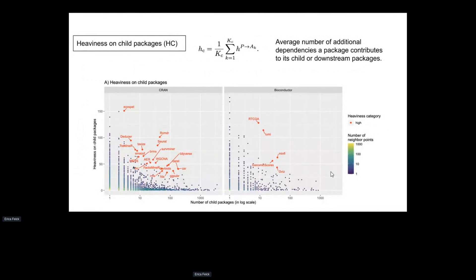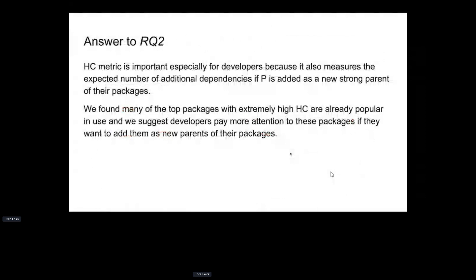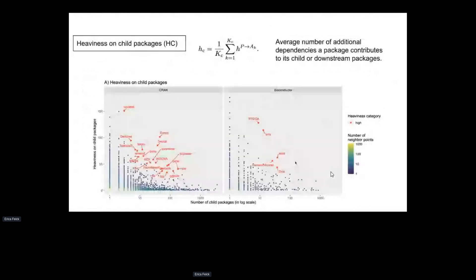The top packages with high HC values include many popular packages such as tidyverse, RTCGA, minfi, and others. This HC metric is especially important for package developers — if you're considering including a package as a new strong dependency, you need to be careful. For example, if you include RTCGA as a new strong dependency, on average 125 additional dependencies will be imported to your package.